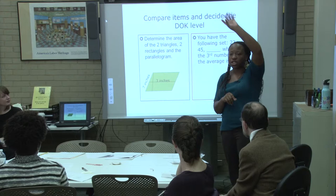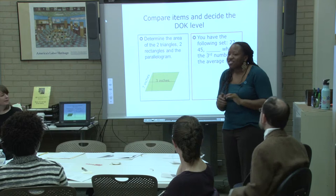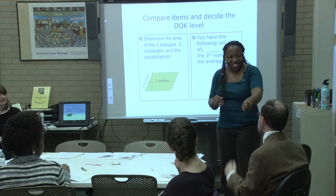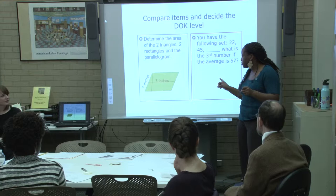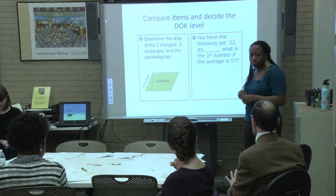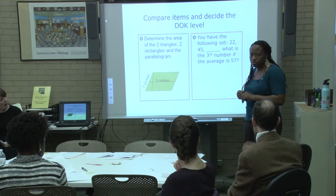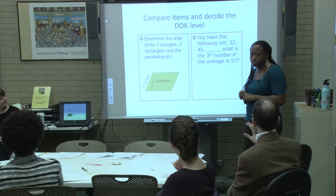You can put your hands up, you can shout it out, whatever you want to do. Somebody give me an answer — it's okay to be wrong. I would say it's Level 3. Why do you say it's Level 3? Because first you have to know the average, and then you have to know what to do in order to solve the question that gives you the average. And you have to find a missing term.